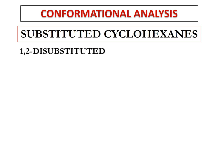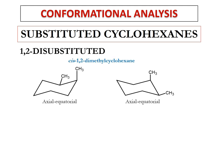For a 1,2-disubstituted cyclohexane, let's take 1,2-dimethylcyclohexane as an example. This could be cis-1,2-dimethylcyclohexane or trans-1,2-dimethylcyclohexane. In the cis-1,2-dimethylcyclohexane, both methyl groups are at positions one and two and both are projected above the ring. One methyl group is axially oriented and the other is equatorially oriented — so we say it has an axial-equatorial orientation.